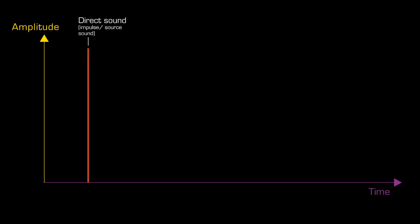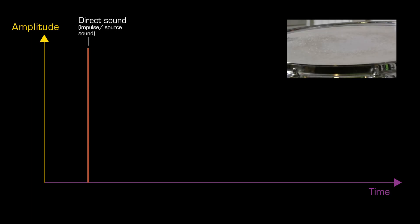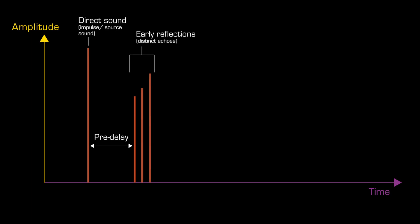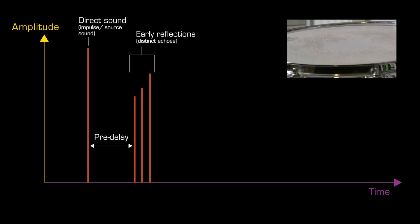One, the direct sound, which reaches our ears directly from the source without first being reflected. Secondly, a so-called pre-delay — a time gap between the direct sound and the first reflections. Thirdly, the first reflections or echoes, so-called early reflections, which reach our ears after the direct sound.